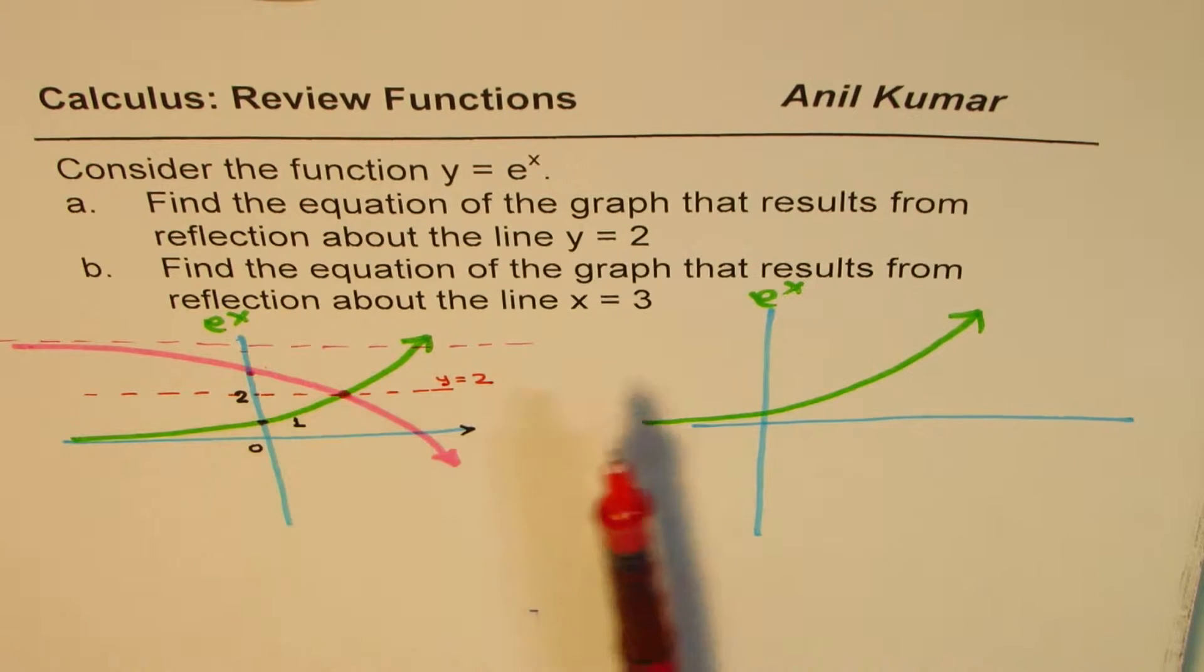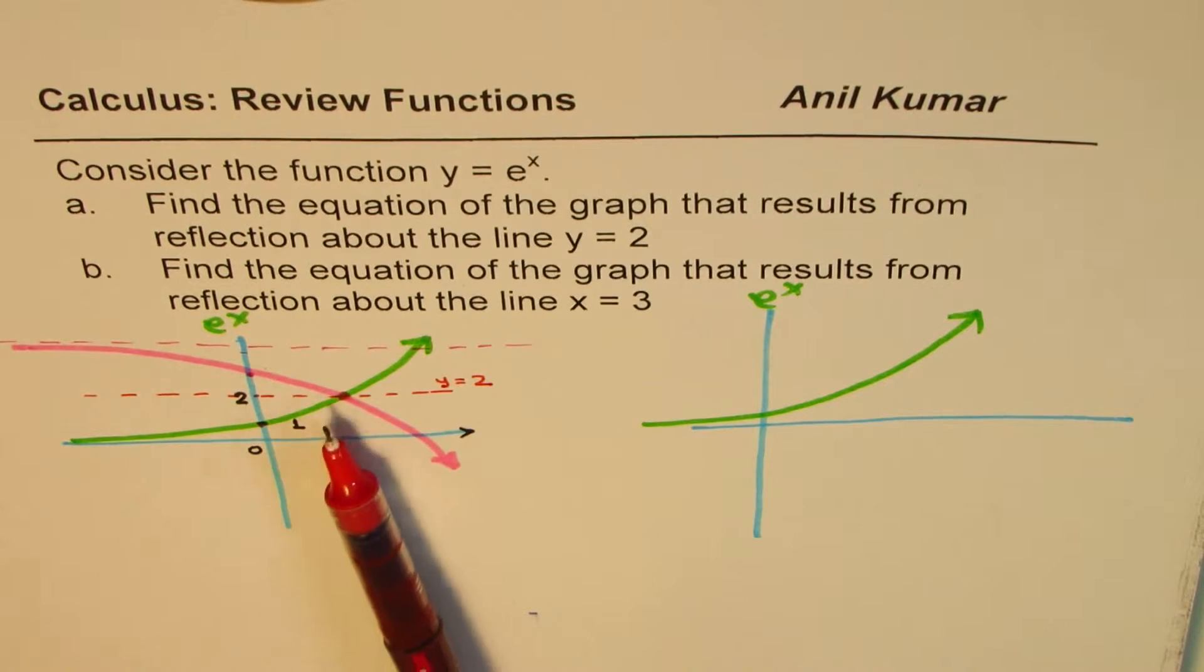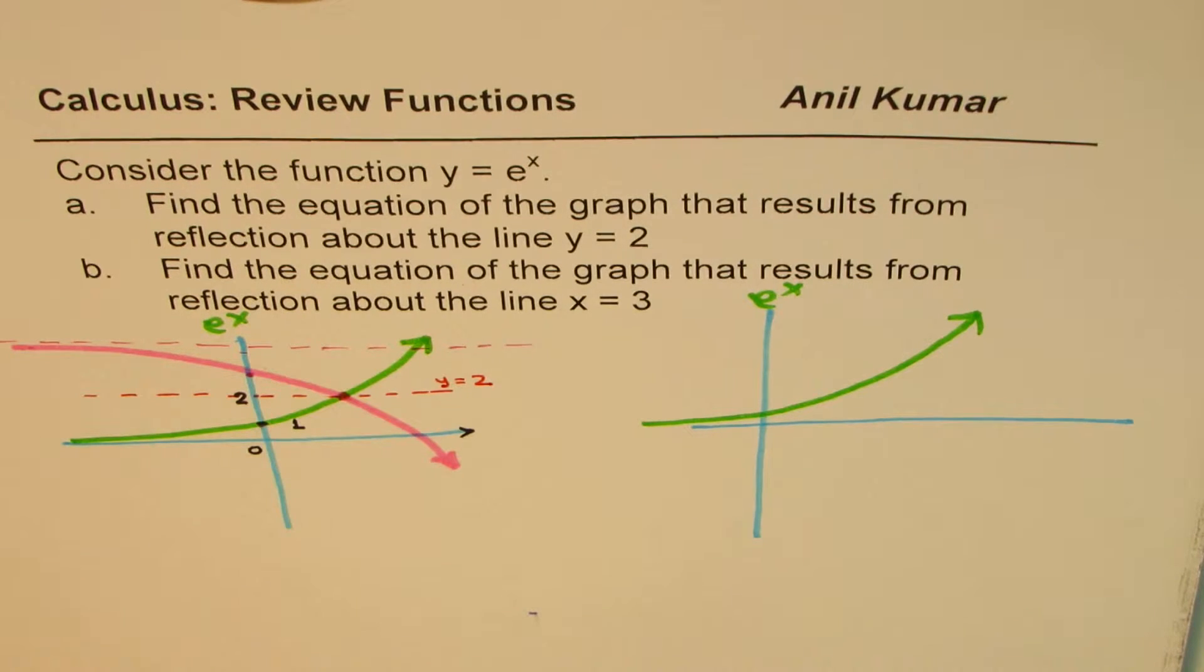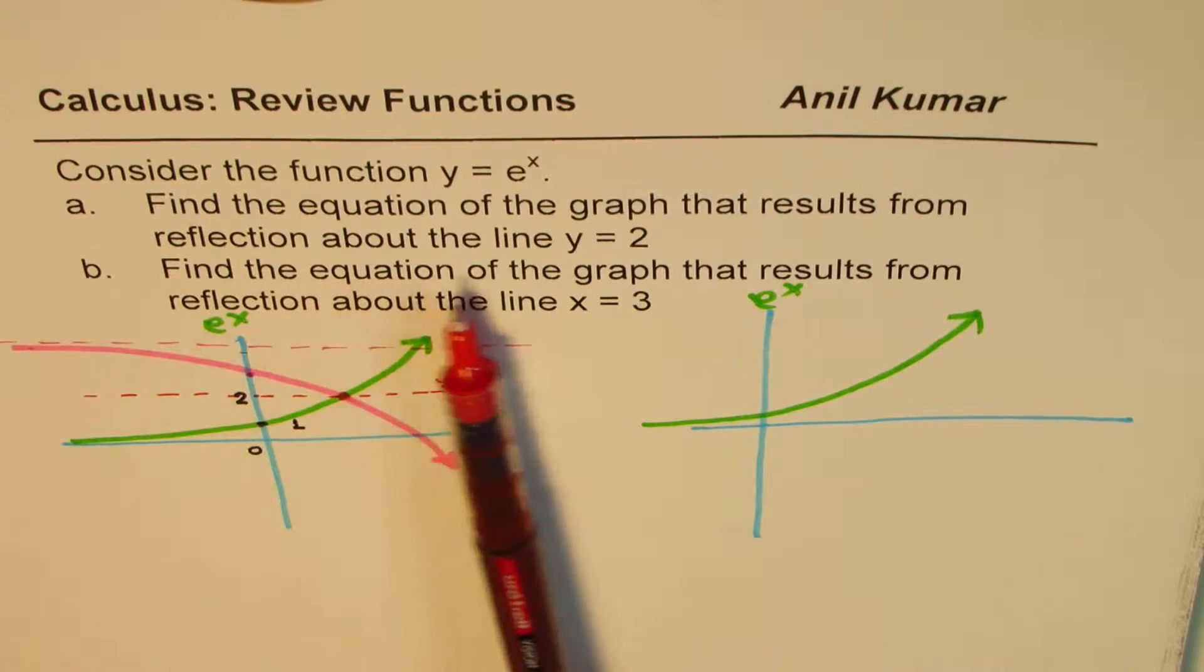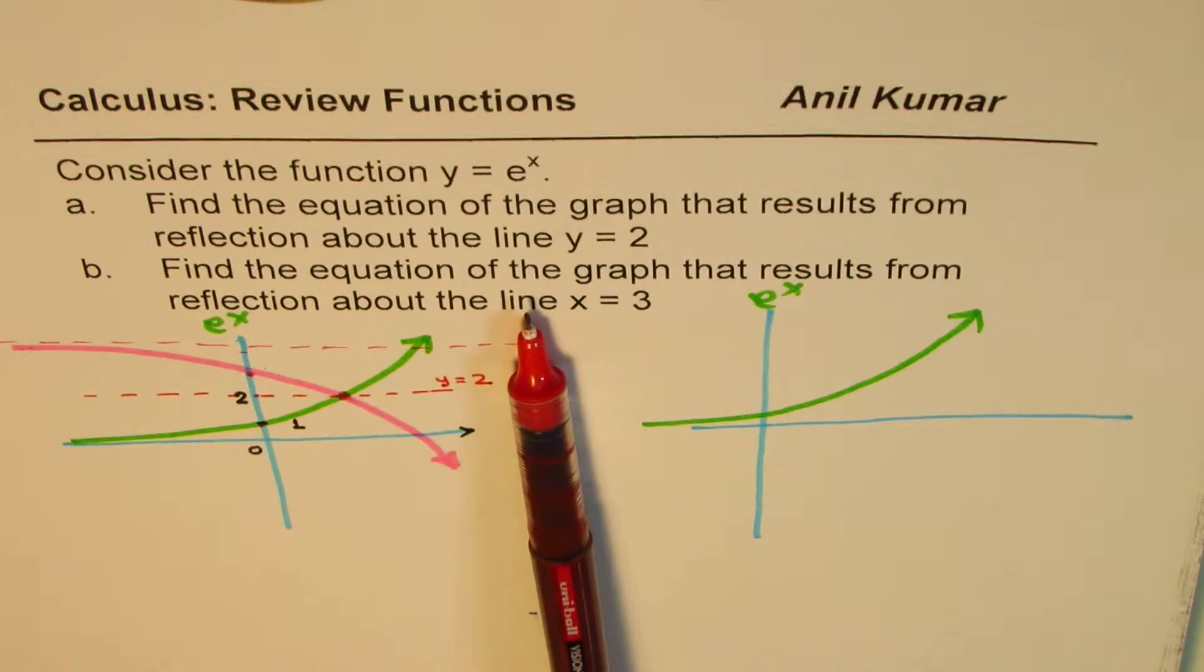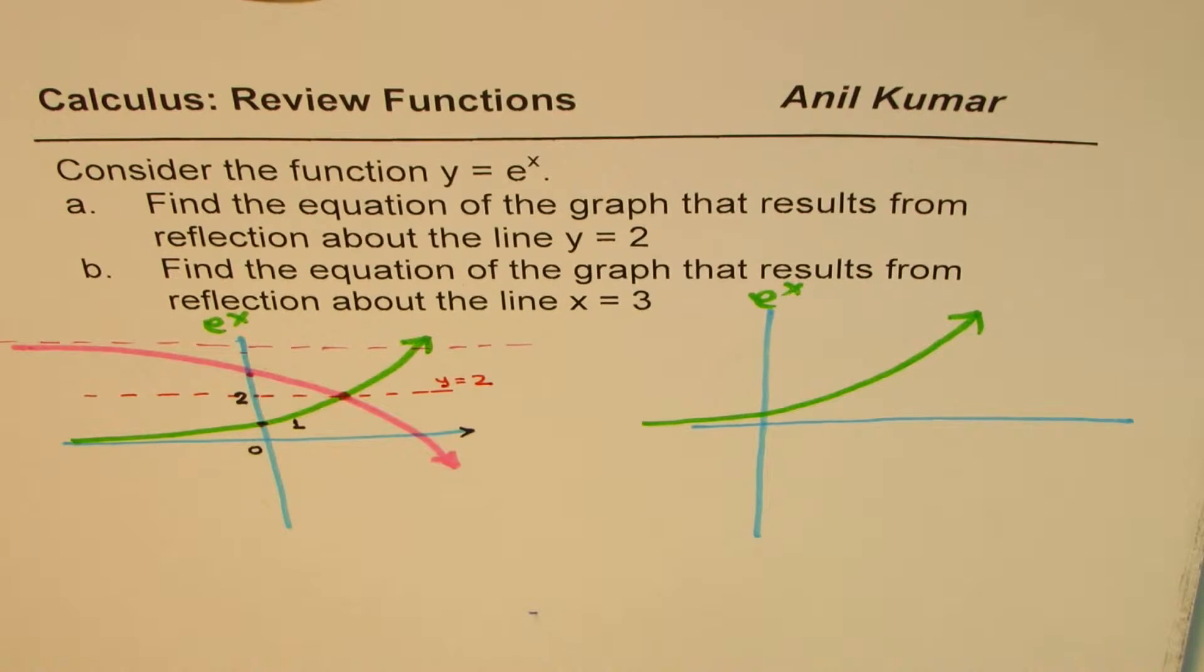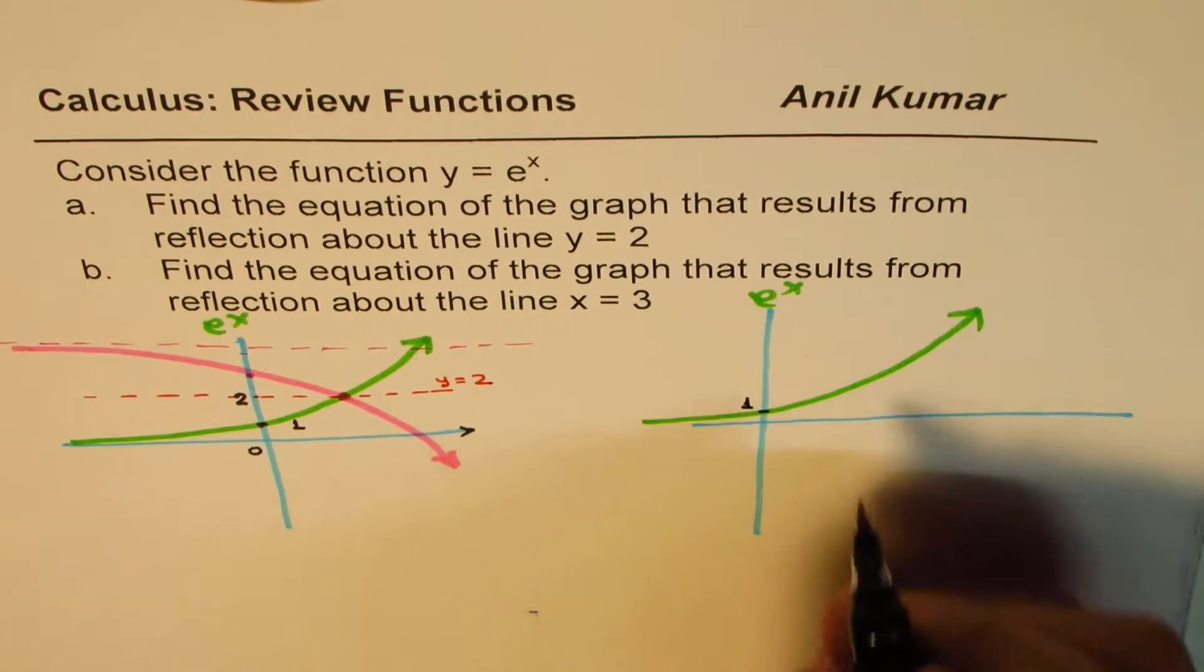I'll meanwhile continue with the second part of this question. So I haven't really given you the answer, but I've shown you how it should look like. Now here, part B is, find the equation of the graph that results from reflection about the line x equals 3. So let's go back to this. Let's say this is 1 for us.